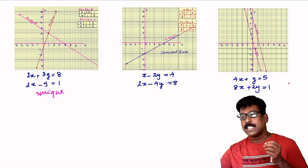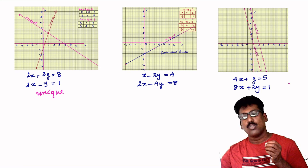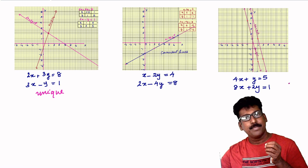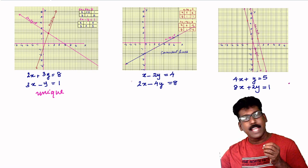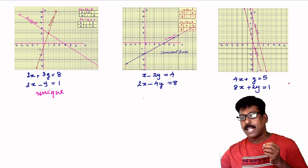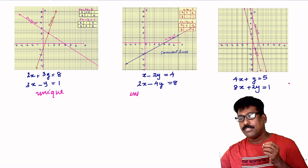The second pair is x minus 2y equal to 4 and 2x minus 4y equal to 8. For this pair you got a coincident line, and you can say it has infinitely many solutions.